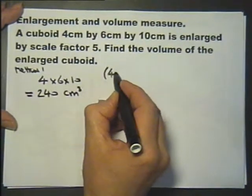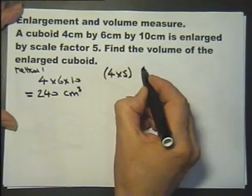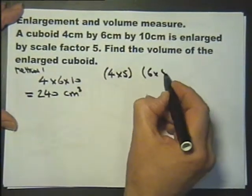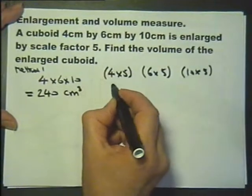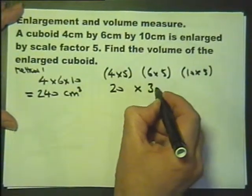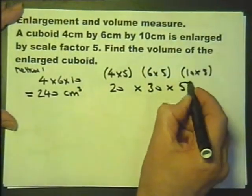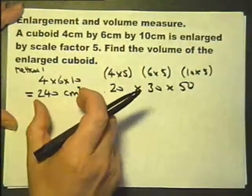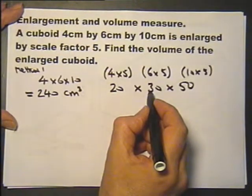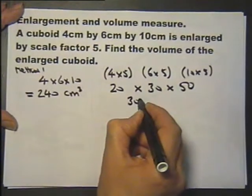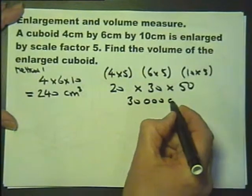Now if we enlarge it by scale factor 5, all of these linear measurements are 5 times longer. The 4 will become 4 fives, the 6 will become 6 fives, and the 10 will become 10 fives. In other words, it's going to be 20 by 30 by 50. So the volume of the enlarged cuboid is 30,000 cubic centimetres.